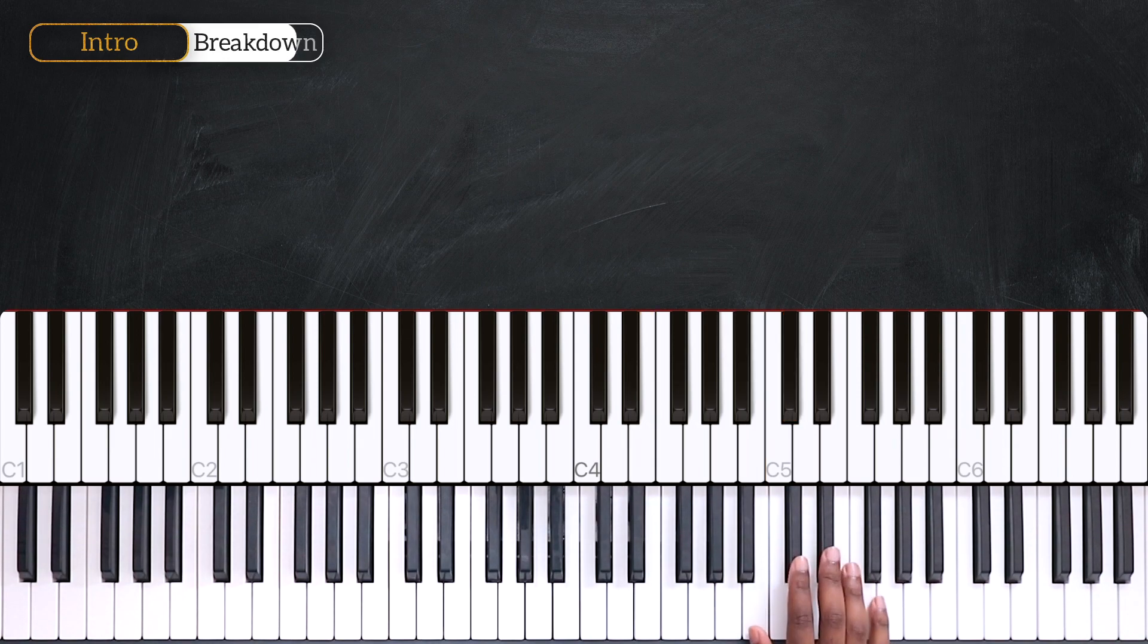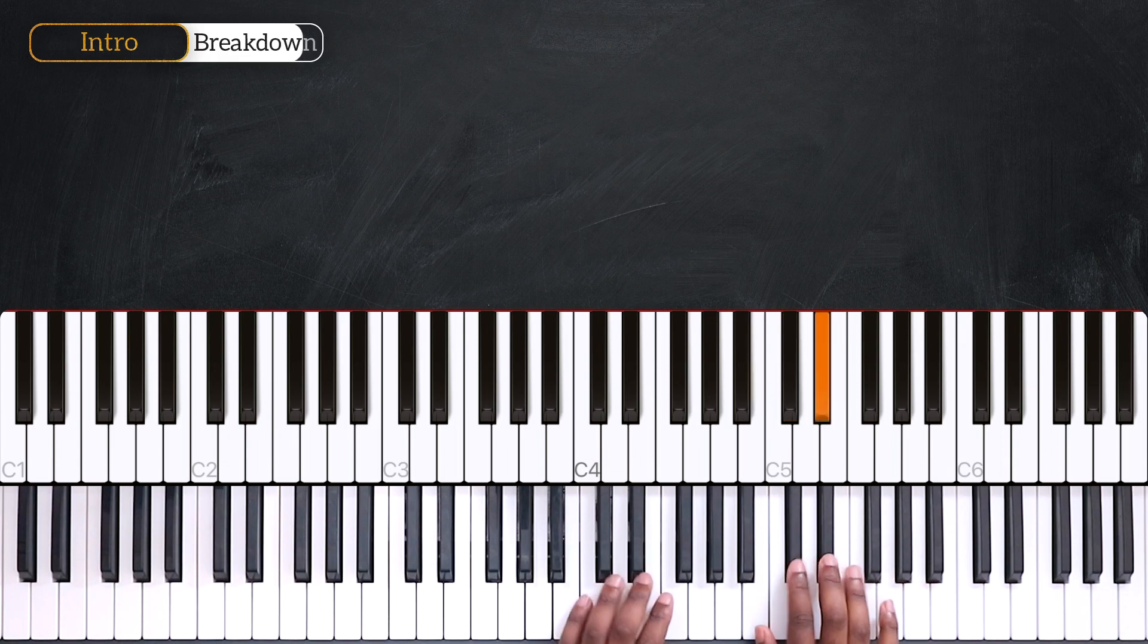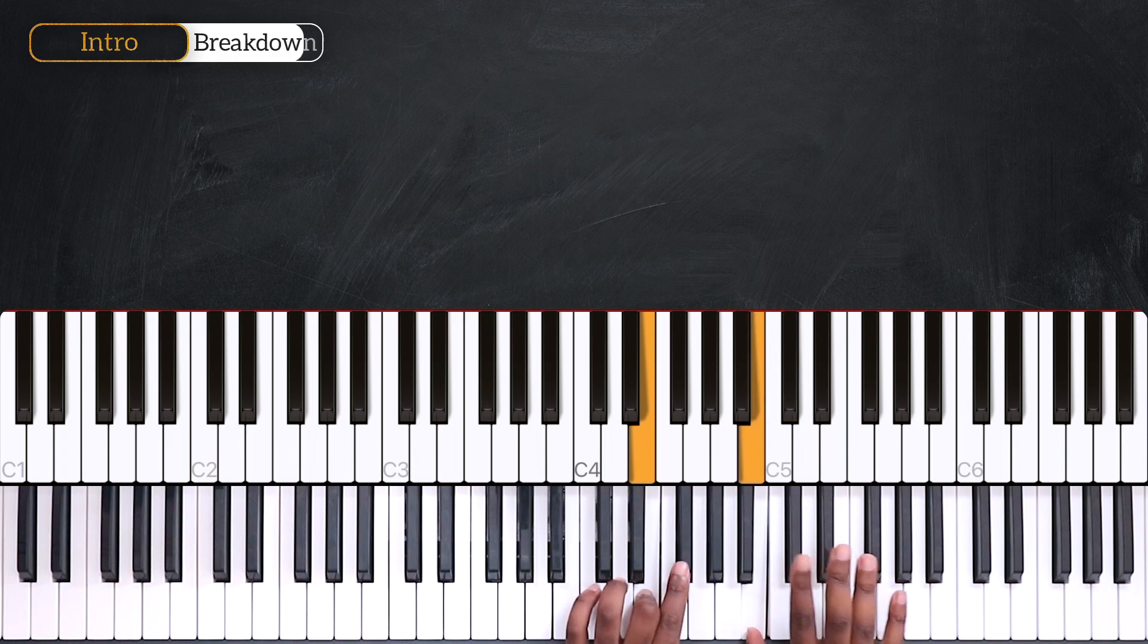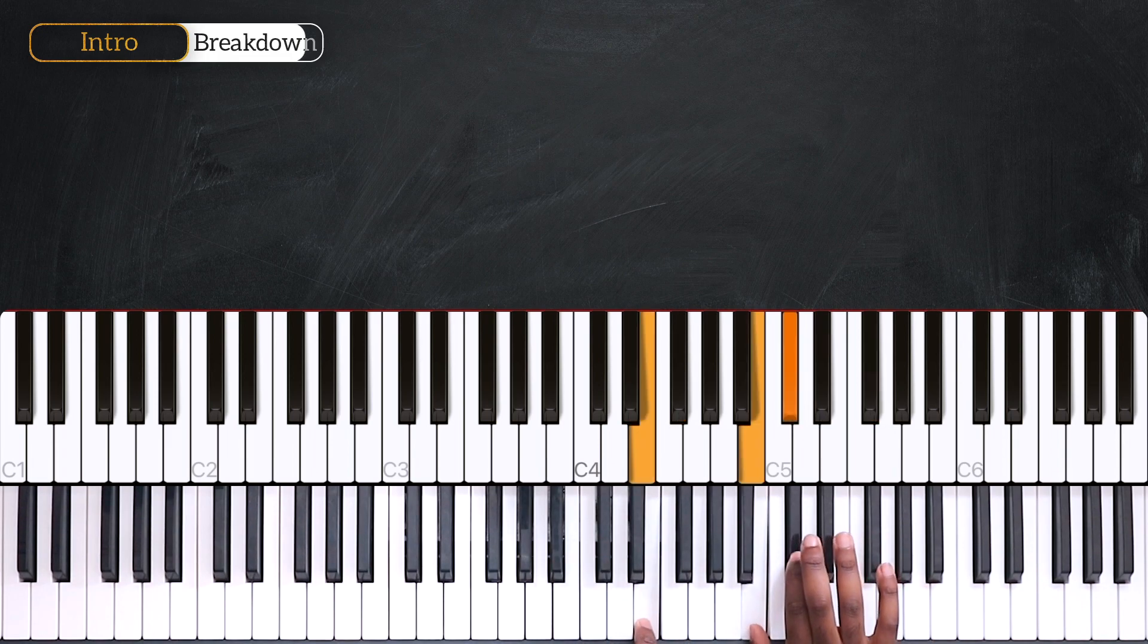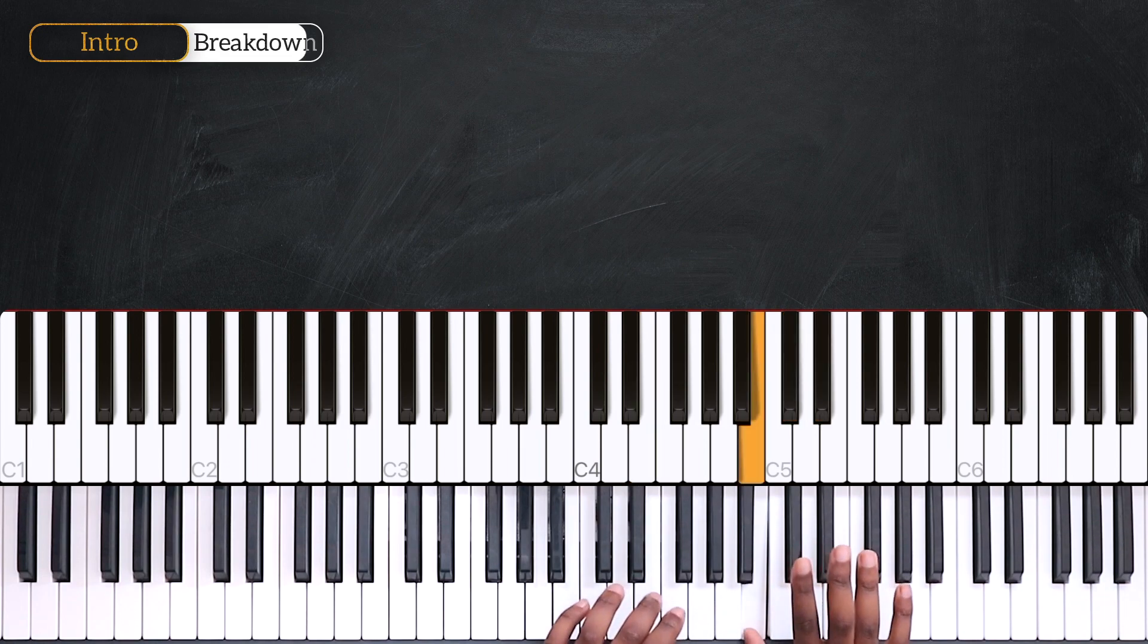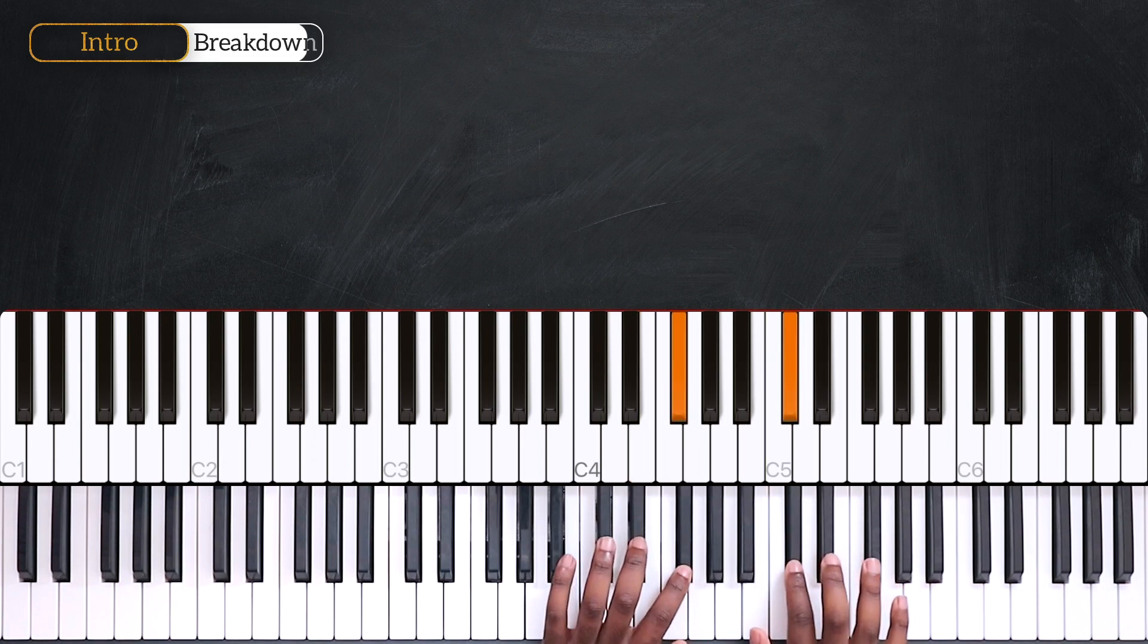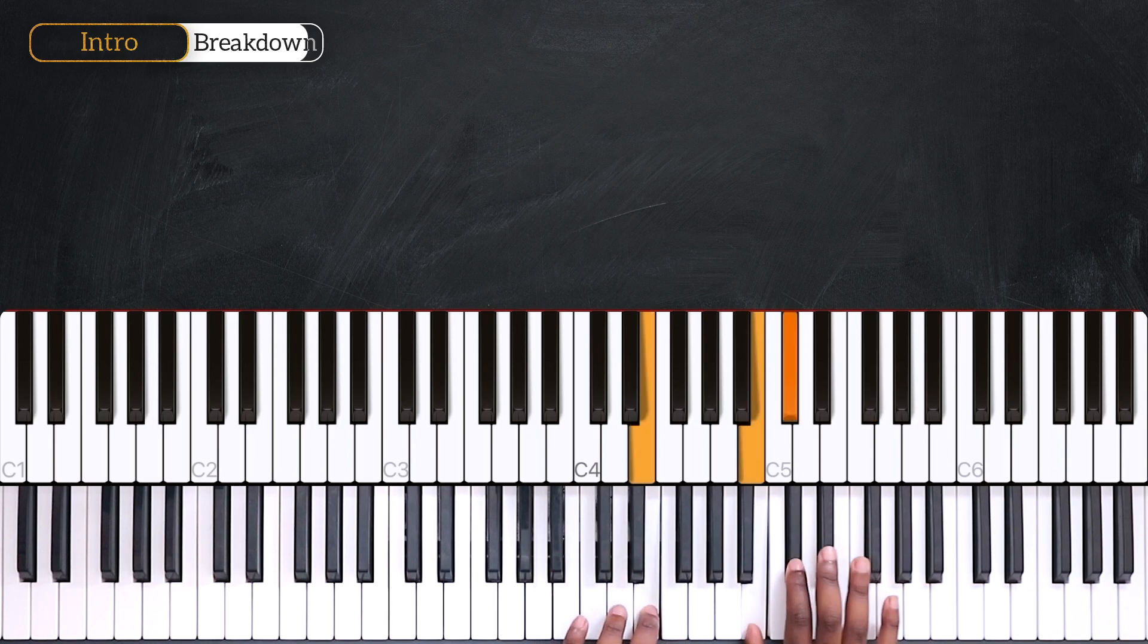So, to end the intro, we have D sharp, D sharp, C sharp, B again, D sharp, C sharp, B, then F sharp, ending with B and C sharp. One, two, like this. So from the top.